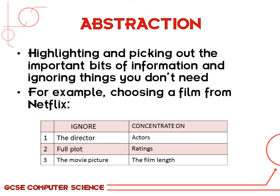Sticking with our Netflix example, when you're choosing a film, things you could ignore include the director of the movie and maybe the full plot — you don't want to know the full plot. Also the actual picture they've used to show the movie. Things you might want to concentrate on more include the actors in the film, since you might favour one particular actor over another. You could look at the star ratings — five stars, three stars, one star — that's obviously quite important. And thirdly, it could be the film length, because if it's quite late at night you don't want to watch a three-hour film.